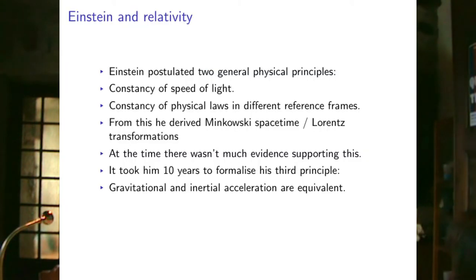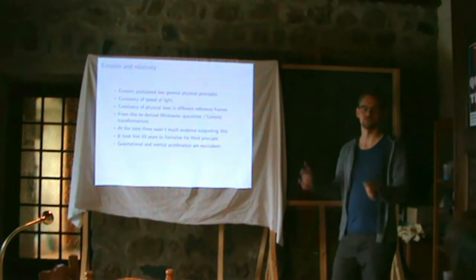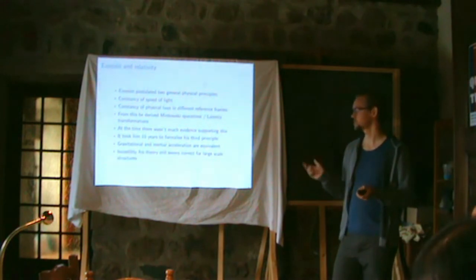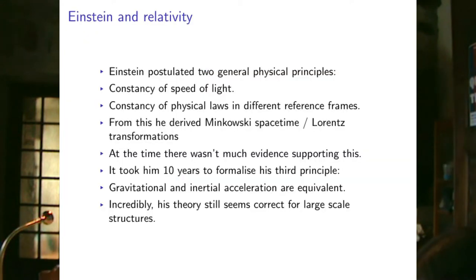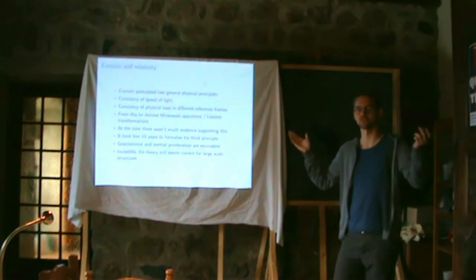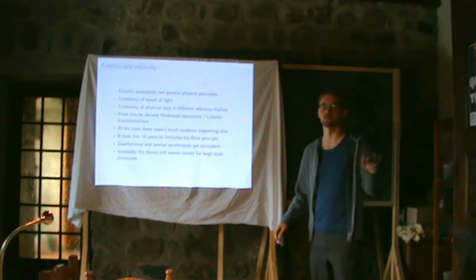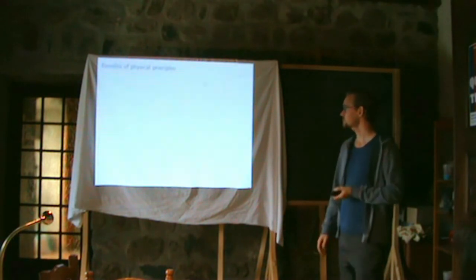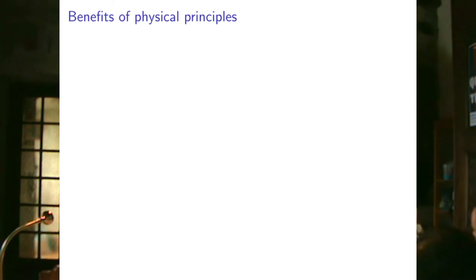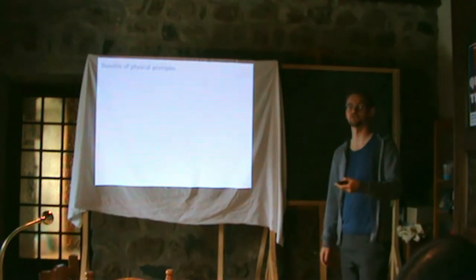At the time there wasn't really much evidence to support this. There were the Michelson-Morley interferometer experiments that showed maybe the speed of light is indeed constant regardless of how fast you were moving, but I don't think Einstein was really aware of or cared much about that result. He just thought about it a lot and figured these things seem very natural — let's see what I can derive from that. It took him 10 more years to formalize the third principle: that gravitational and inertial acceleration are equivalent, and from that — using Riemannian geometry — you can derive a lot.